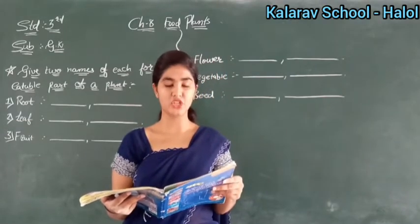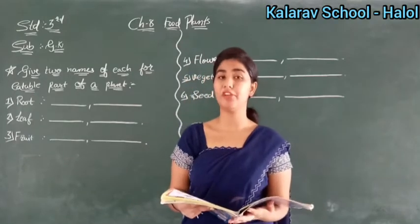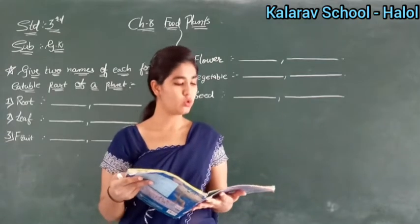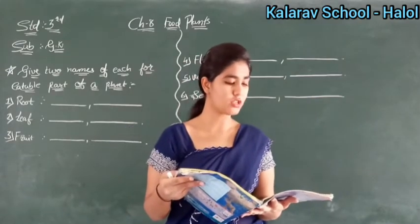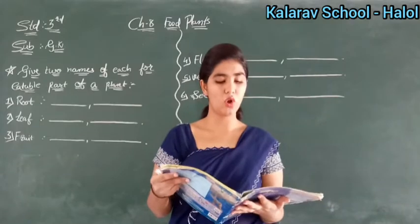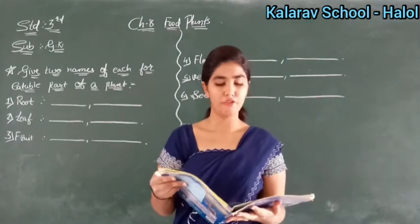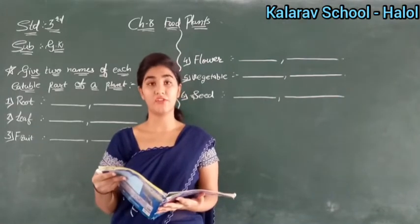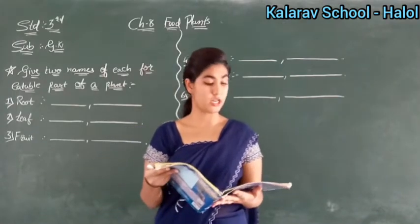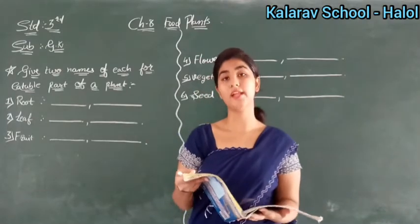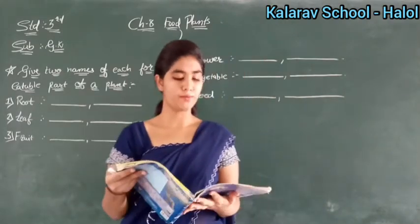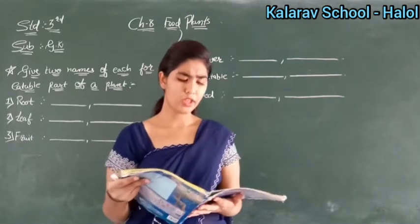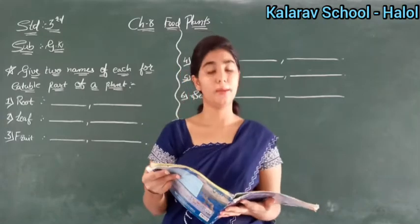For example, spinach is full of iron. So which vitamin we get from spinach? We get iron. We eat the root, leaves, stems or flowers of certain plants. They all have some special taste or health benefit. From some vegetable we eat root, from some plant we eat leaves, some stems and some flowers also we eat. So they all have some special taste or health benefit.